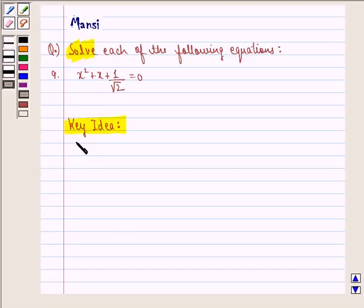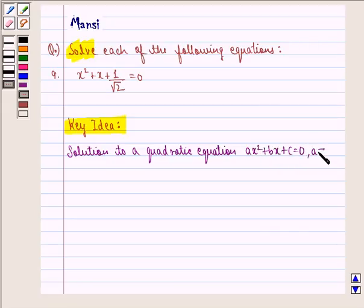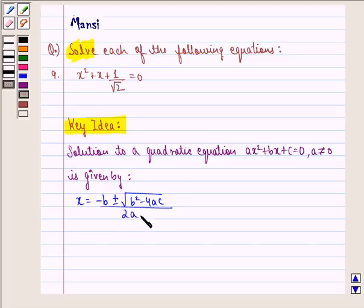We see that solution to a quadratic equation ax squared plus bx plus c equal to 0, where a is not equal to 0, is given by x equal to minus b plus minus under the root b square minus 4ac, the whole divided by 2a. This is same as minus b plus minus under the root 4ac minus b square i, the whole divided by 2a.